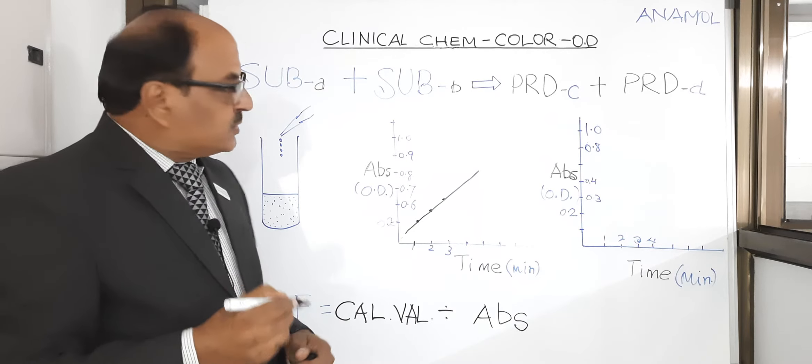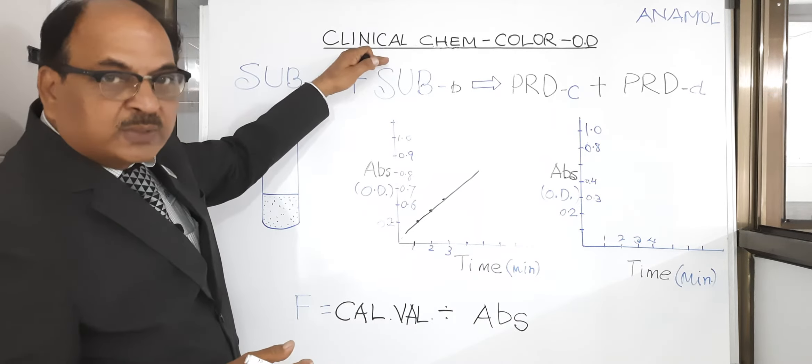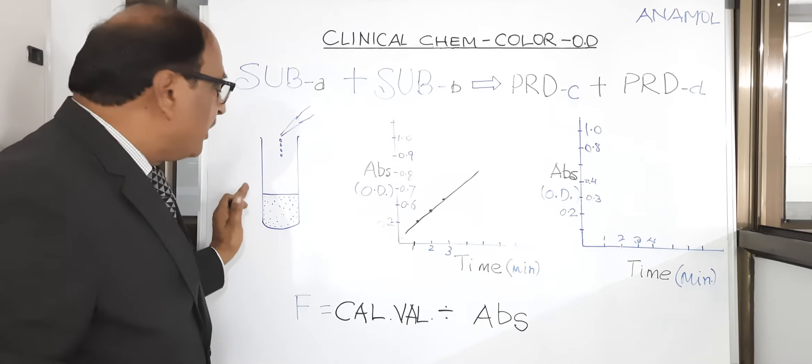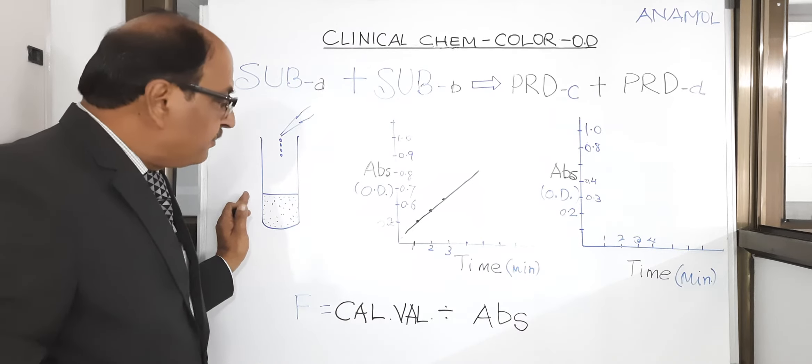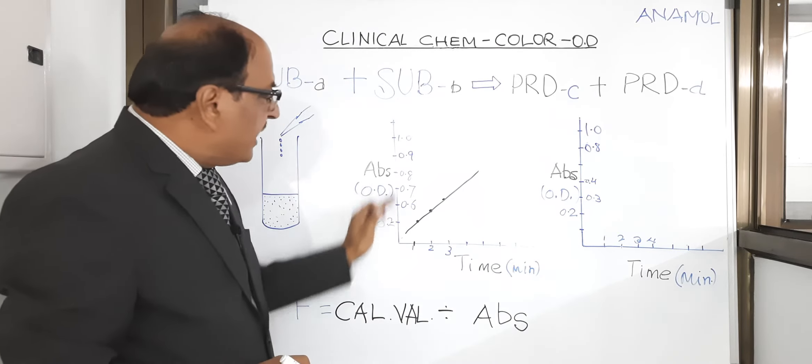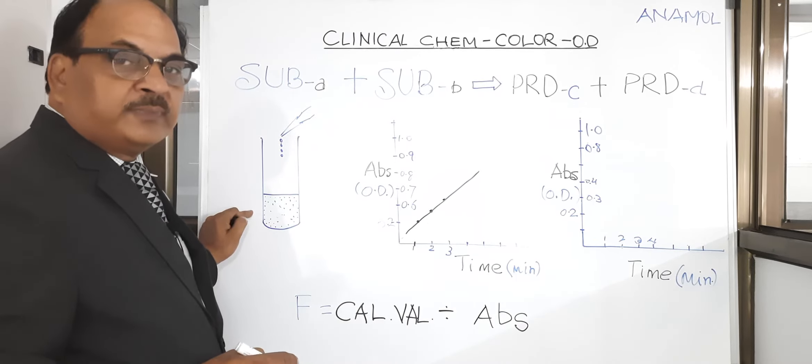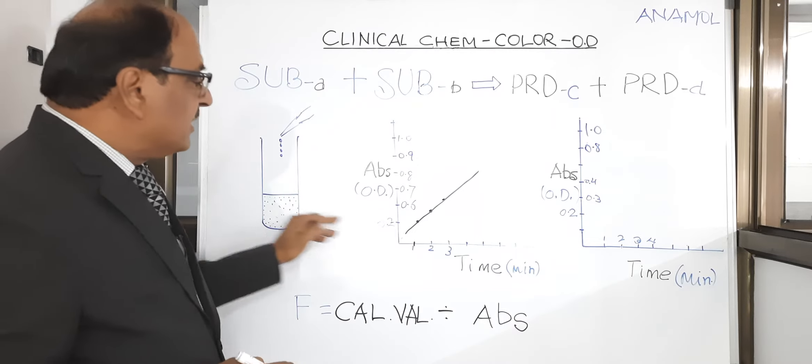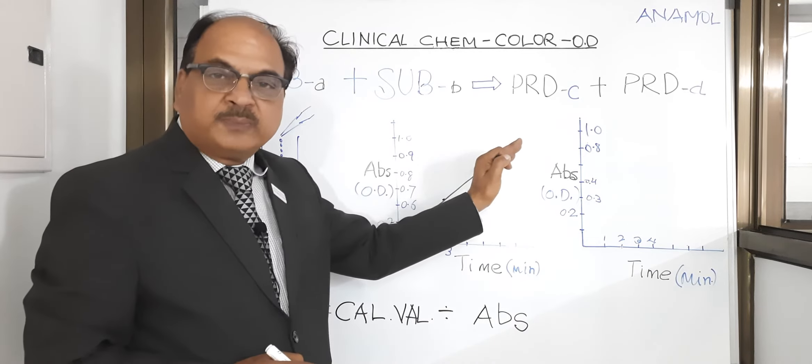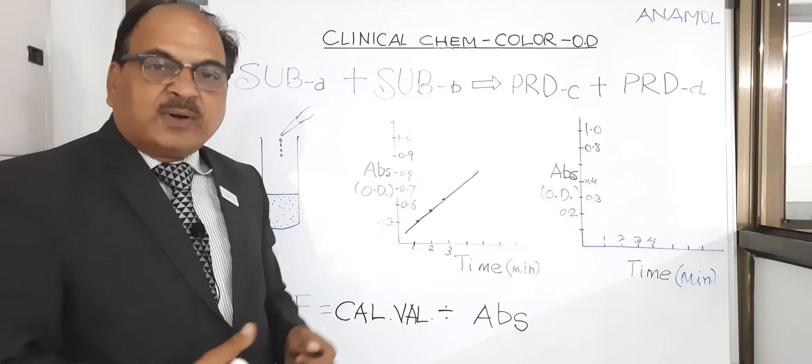So you plot a graph which is increasing with time. You got connection between technical insert principle, what is happening in your tube where you find the color, and what instrument is showing as a graphical form of the absorbance taken by this solution at a specified wavelength. That is the increasing graph.